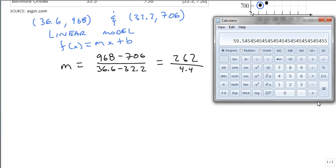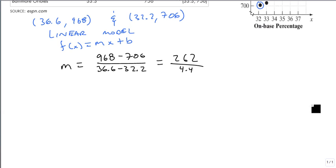And we get 59.54 repeated. And so here's my slope. What this says is for every percentage you increase your on-base percentage by, you'll increase your score by 59 runs.